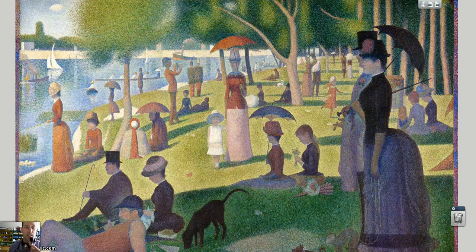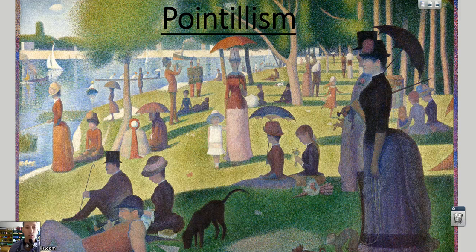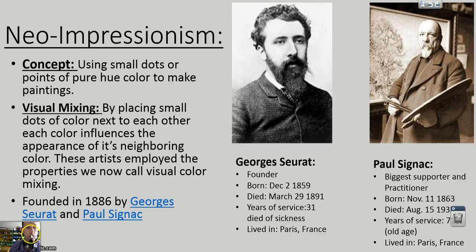Welcome back. In this lesson, we're going to learn about the art history movement called pointillism. Most people call it pointillism, but it is also known as neo-impressionism. This is one of the main founding works of the movement, an artwork by George Seurat named Sunday Morning in the Park. This neo-impressionism was started by George Seurat — he was the founder.